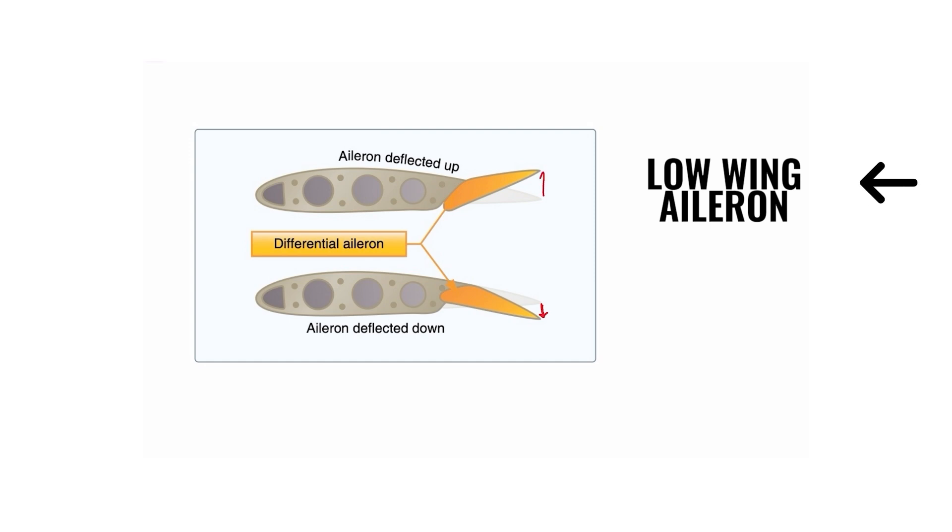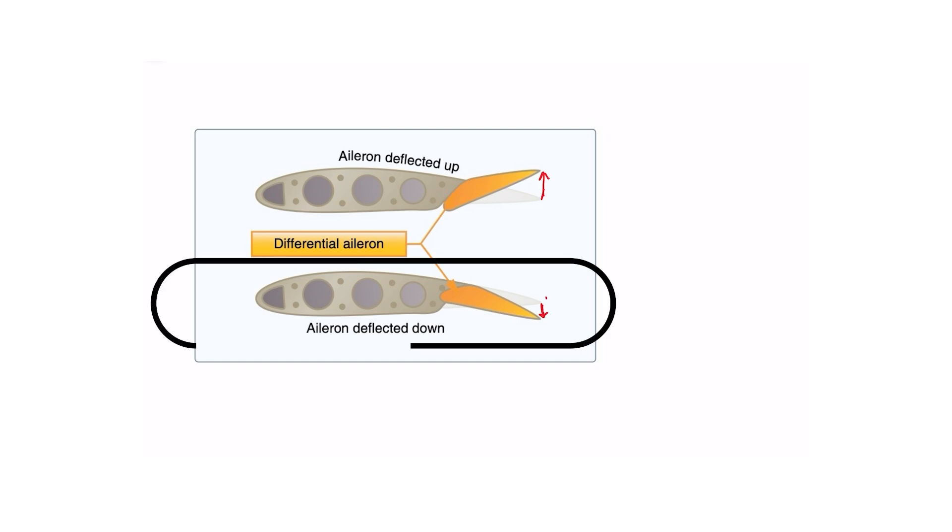This is done by the manufacturer to help with induced drag. So bank left, yaw right, so the right aileron, the top one, it doesn't go down nearly as far as the left one goes up. And the reason is, we throw the left one up farther to counter the induced drag off of that high wing. And we counter that induced drag off the high wing with parasite drag. Now, that's one method.